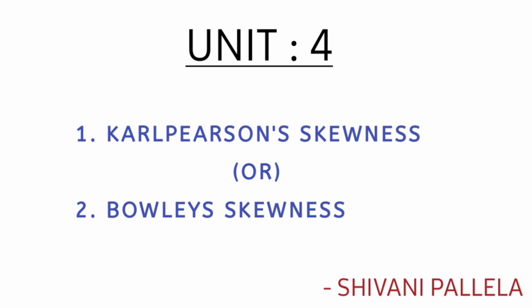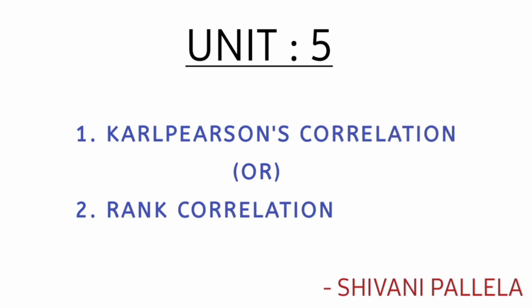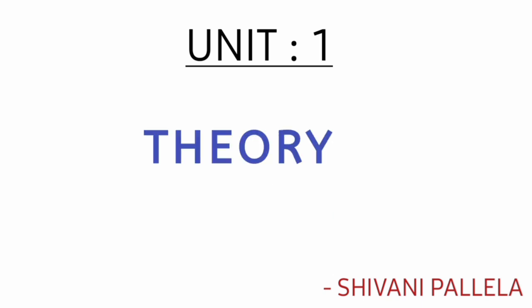In unit number five, the topics are Karl Pearson correlation and rank correlation. Preparing any one of these two topics will be sufficient for the 12 marks compulsory question — either Karl Pearson correlation or rank correlation.